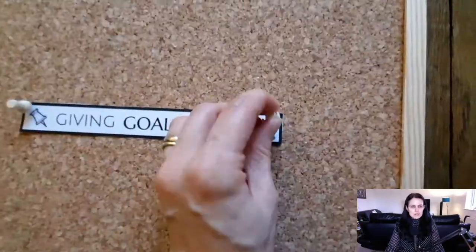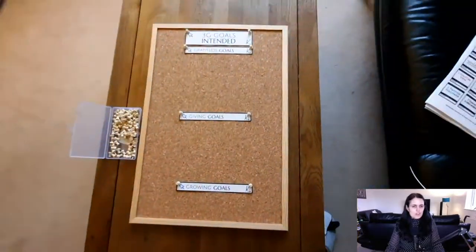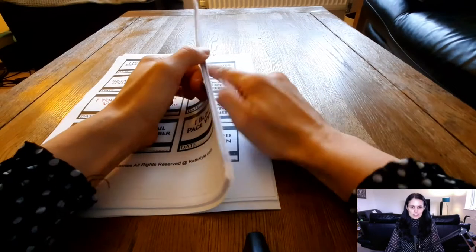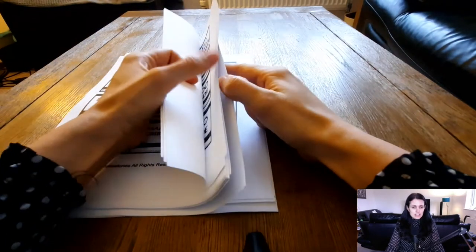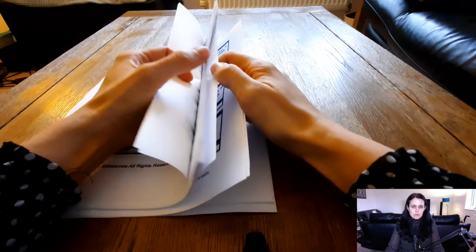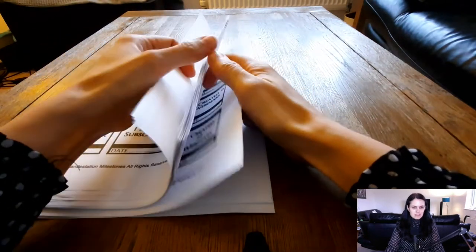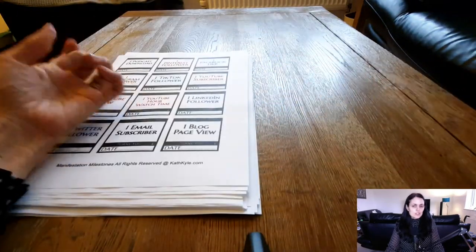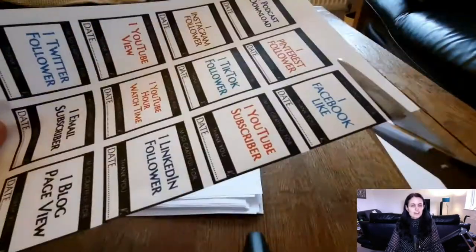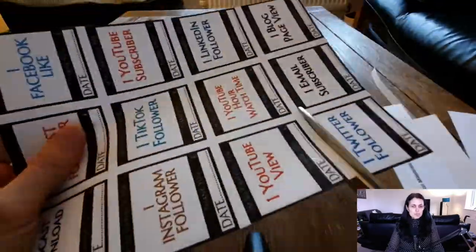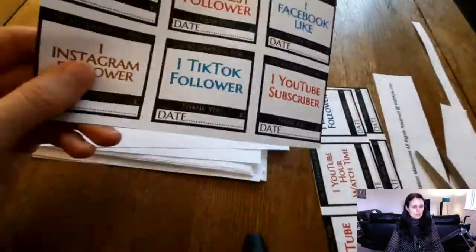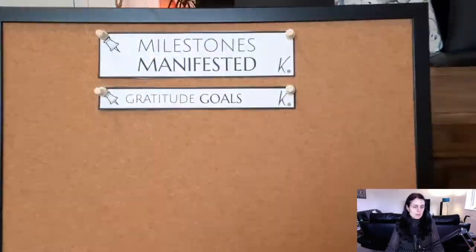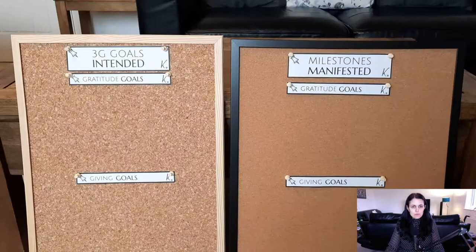Examples of growing goals include: stopped caring what other people think of me, learned how to do video editing, got certified in Reiki healing, overcame my fear of public speaking, improved my relationship with money. If you want to learn more about giving goals, gratitude goals, and growing goals, you can get a copy of my Stamp Goals book by going to Amazon and searching for 'Stamp Goals book.'